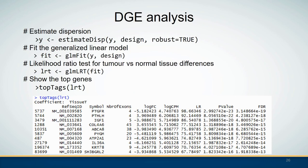When performing DGE analysis using edgeR, first we estimate the dispersion coefficient, then the glmFit() function fits a generalized linear model using the DGEList object and design matrix. The glmLRT() function performs the likelihood ratio test for tumor versus normal tissues. Finally, the topTags() function returns the top genes from the DGE analysis. The results include log fold change, log counts per million, likelihood ratio test statistic, p-values, and FDR-adjusted p-values.